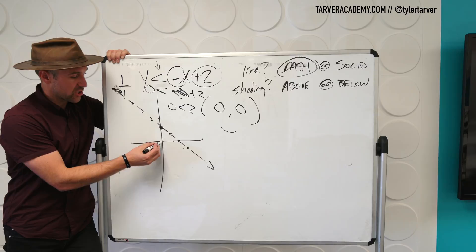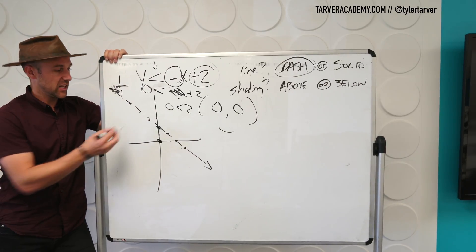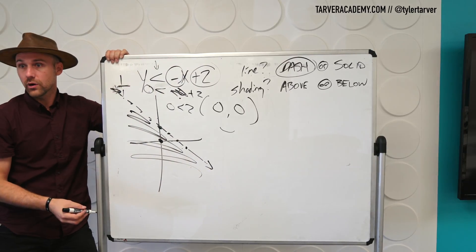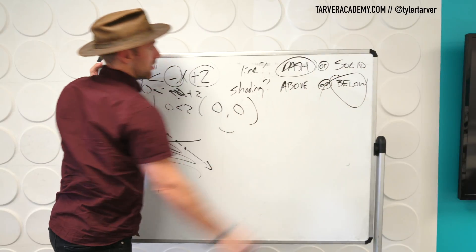Yeah. So does the origin work? Yep. So where am I going to shade? Above or below? Because it works. If the origin had not worked, where would I shade? Above. But it did so below.